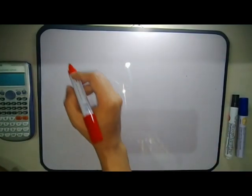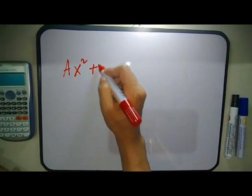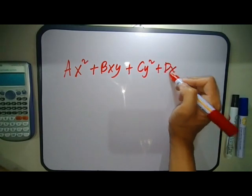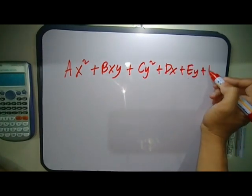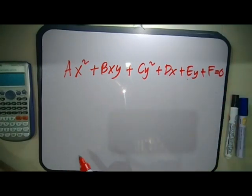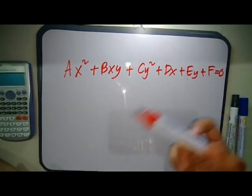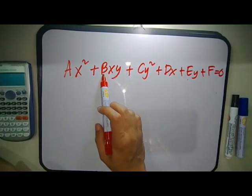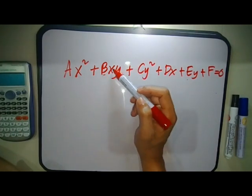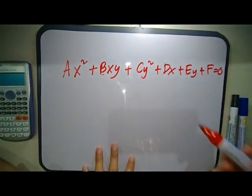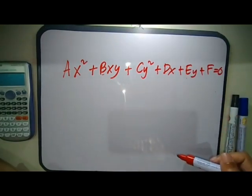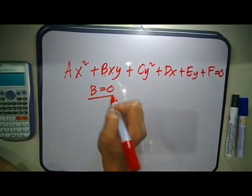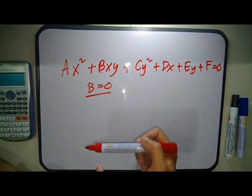The general equation for a conic section is Ax² + Bxy + Cy² + Dx + Ey + F = 0, where A to E are coefficients of the variables and F is a constant. The B term here corresponds to the coefficient of the xy variable and represents the orientation of the conic section.